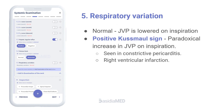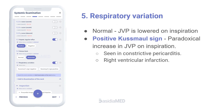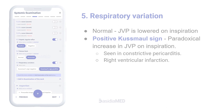Respiratory variations: Normally, JVP is lowered on inspiration. A positive Kussmaul's sign is the paradoxical increase in JVP on inspiration, and it is seen in constrictive pericarditis.